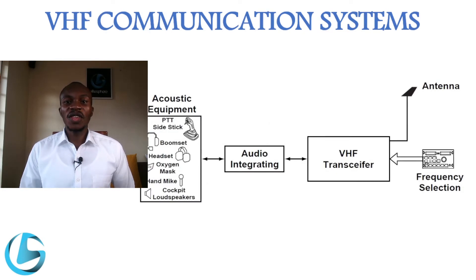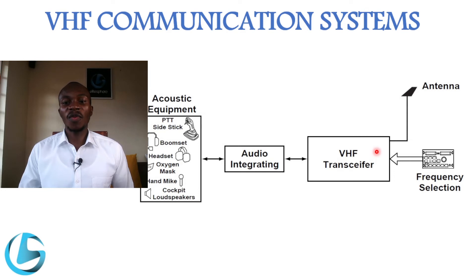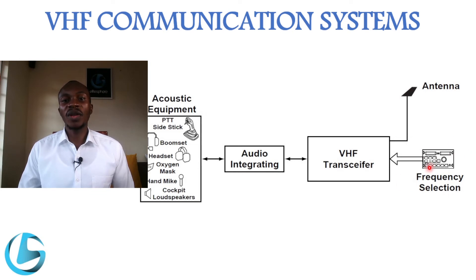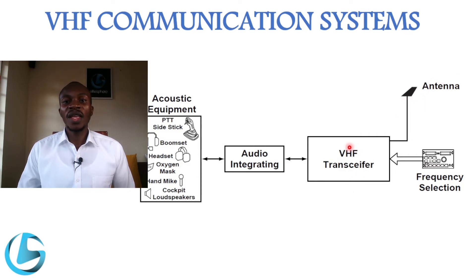This is the basic structure of a VHF system with all the components mentioned. We have the transceiver, which is both transmitter and receiver; the antenna mounted on top and at the bottom of the fuselage; and the frequency selection panel located in the cockpit, with the transceiver housed in the avionics compartment.